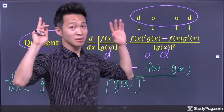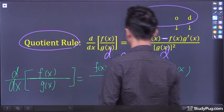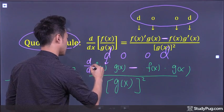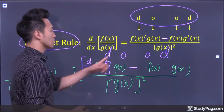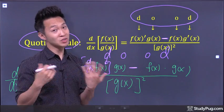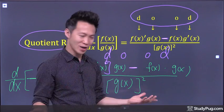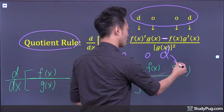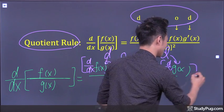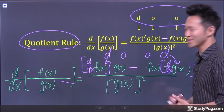Now let's apply the DOOD — D-O-O-D. D means for the first term, we take the derivative. O means for the second term, we don't have to do anything — O means zero. Third term, once again we have an O, so we don't have to do anything. The fourth term, we have another D, so we take the derivative. And that's it. Quotient rule — simple as that.